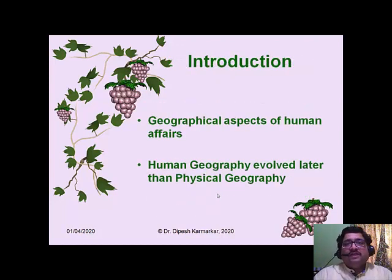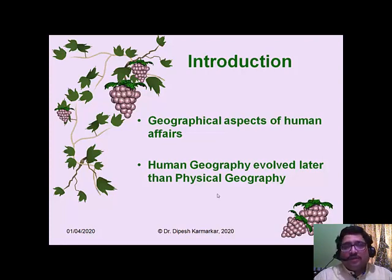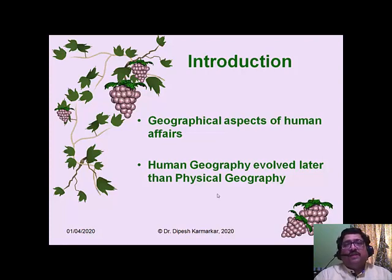The word human geography very clearly suggests that it is geography of human affairs — that is, it is a study of geographical aspects of human affairs. By human affairs I mean aspects associated with human life: economic activities, human culture, political and social organizations that humans have built. All of this together is studied from a geographical point of view. That is what fundamentally human geography is.